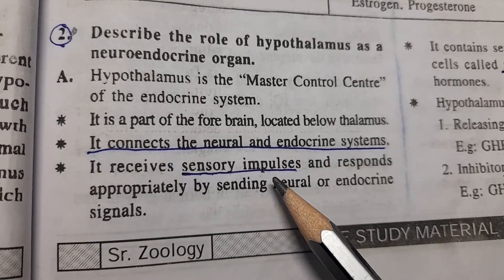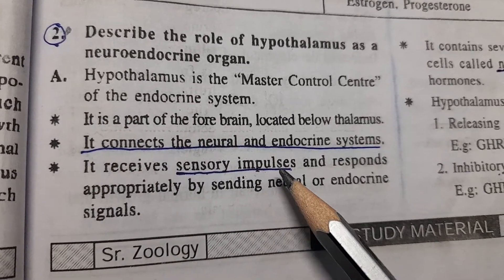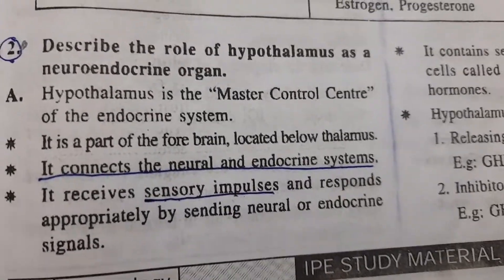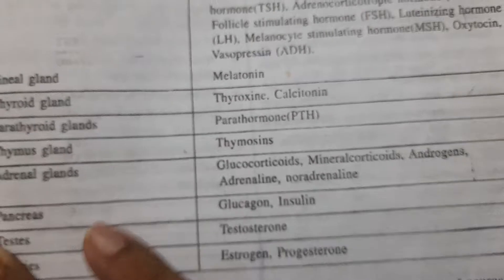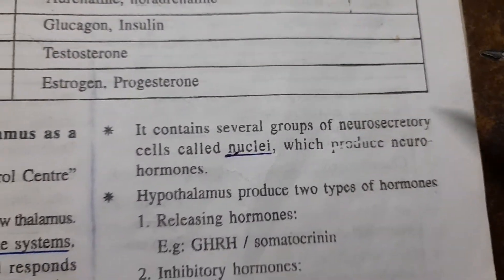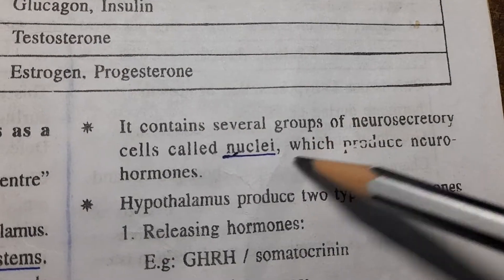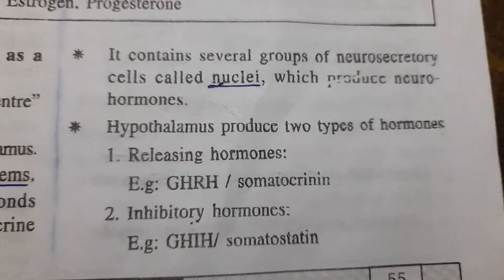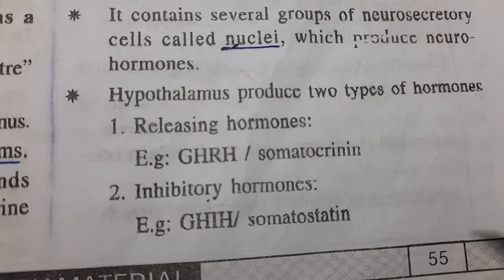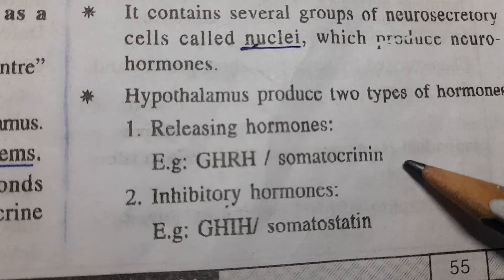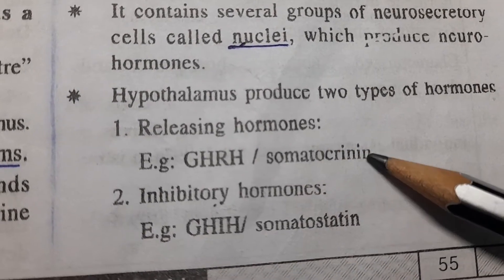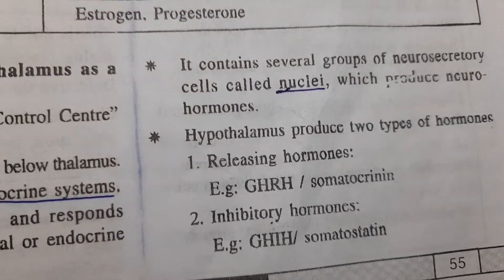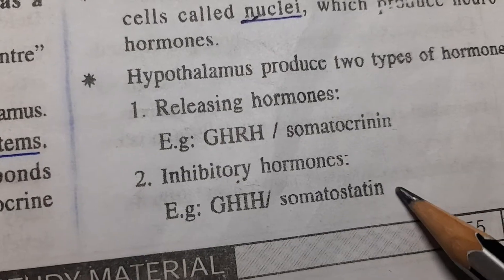It receives sensory impulses and responds appropriately by sending neural or endocrine signals. It contains several groups of neurosecretory cells called nuclei, which produce neurohormones. Hypothalamus produces two types of hormones: releasing hormones and inhibiting hormones. For example, growth hormone releasing hormone is somatocrinine, and growth hormone inhibiting hormone is somatostatin.